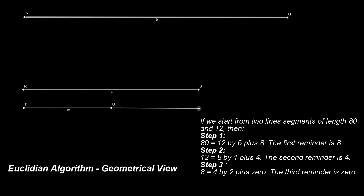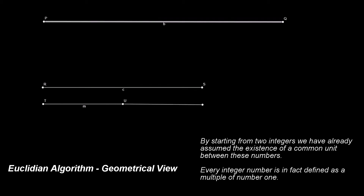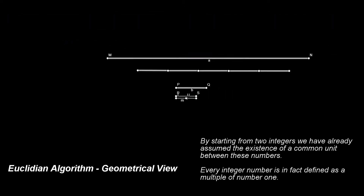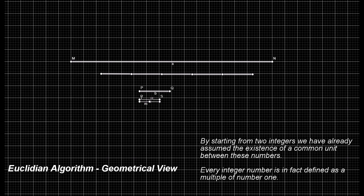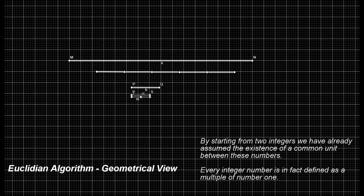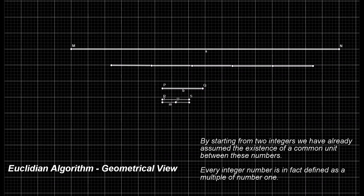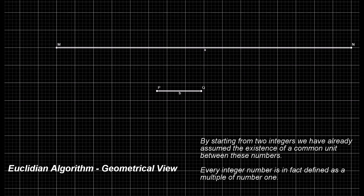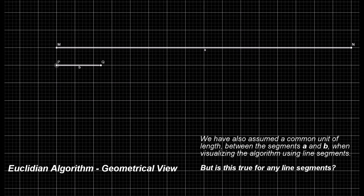Let's look deeper into this process and its implementation done by this algorithm. Knowingly or not, we have in fact cheated. By starting from two integers, we have already assumed the existence of a common unit between these numbers. Every integer number is in fact defined as a multiple of number 1. The process, as described above, always finds the greatest integer that divides both initial numbers. In the worst case scenario, this number is 1 — then the initial numbers A and B are relatively prime. We have also assumed a common unit of length between the segments A and B when visualizing the algorithm using line segments.